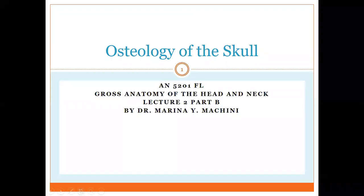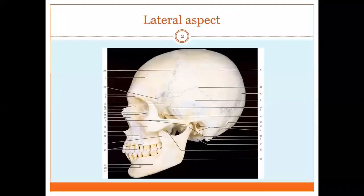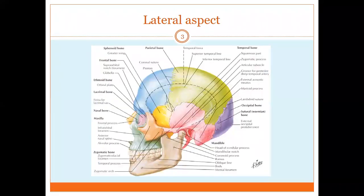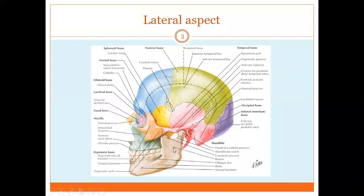Hello everybody, welcome back to osteology of the skull. In this part of our lecture we'll talk about the lateral aspect of the skull. This is a photo of our actual skull, and here is a color-coded picture in which we can see what bones constitute the lateral aspect. Going from front to back: frontal bone, parietal, occipital bone, temporal, sphenoid — this is the greater wing of sphenoid — zygomatic bone, and barely we can see ethmoid, lacrimal, maxilla, nasal bone, and mandible.